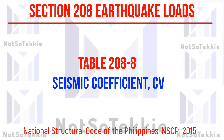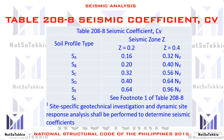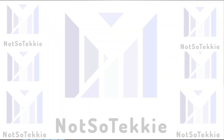C_V is the site coefficient. There is Table 208-8, the seismic coefficient C_V, as stated in Section 208 of the NSCP. It is divided by soil profile type: SA, SB, SC, SD, SE, and SF, and by seismic zone — since we only have two zones, Zone 2 and Zone 4 — giving the equivalent value of C_A or seismic coefficient per soil type. For soil profile type SF, a site-specific geotechnical investigation and dynamic site response analysis shall be performed to determine the seismic site coefficient.